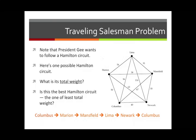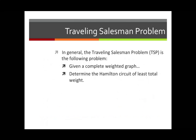That was straightforward, but here's a harder question: is this the best Hamilton circuit — meaning the one of least total weight? That's harder to answer because we need to consider all other possible Hamilton circuits. In general, this problem is called the traveling salesman problem. You are given a complete weighted graph and the problem is to determine the Hamilton circuit of least total weight.